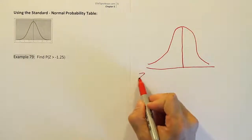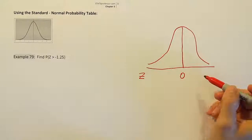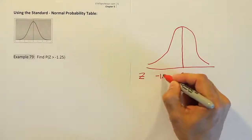We're going to label a z-axis here. Put zero at the center. So where would negative 1.25 be? Well it would be on the left because it's a negative number.